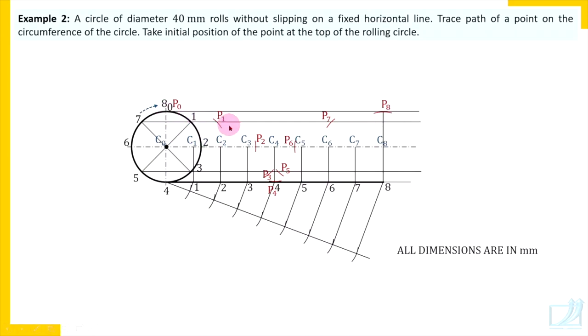Now all these points, P0, P1, P2, P3, P4, etc. You join by smooth curve to get the required cycloid. So this is the curve cycloid. Now insert all dimensions. And we have completed that one. Simple.